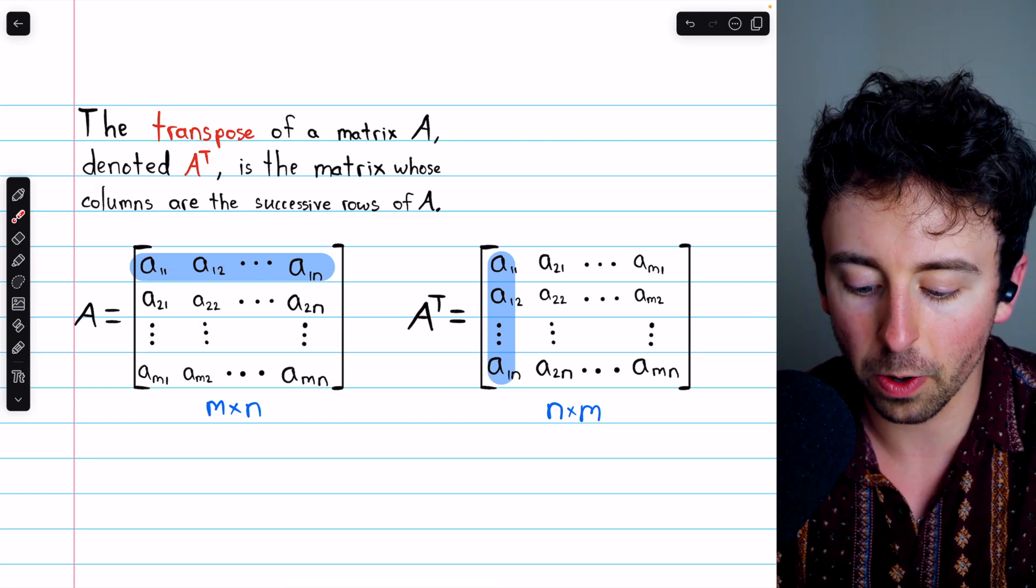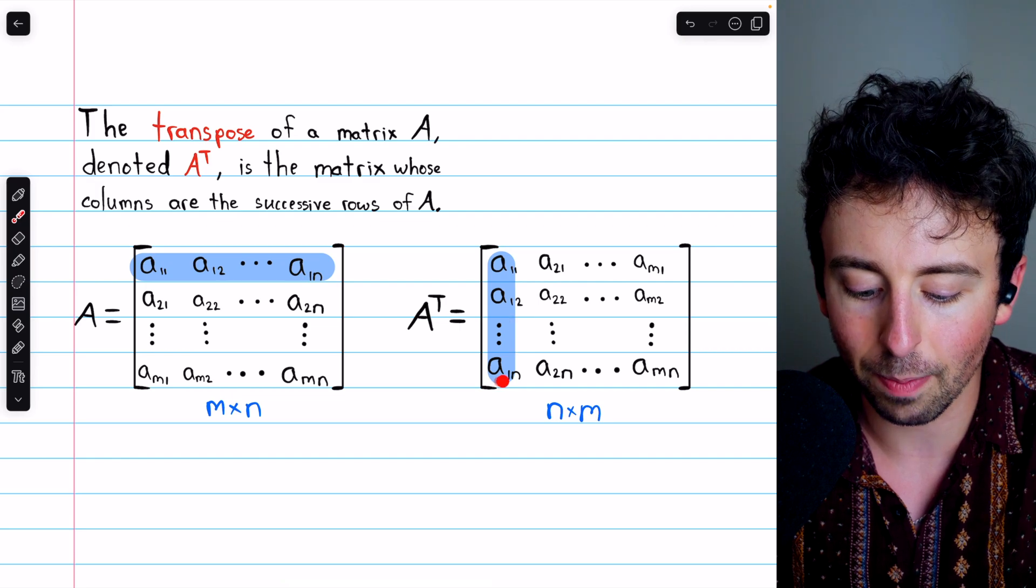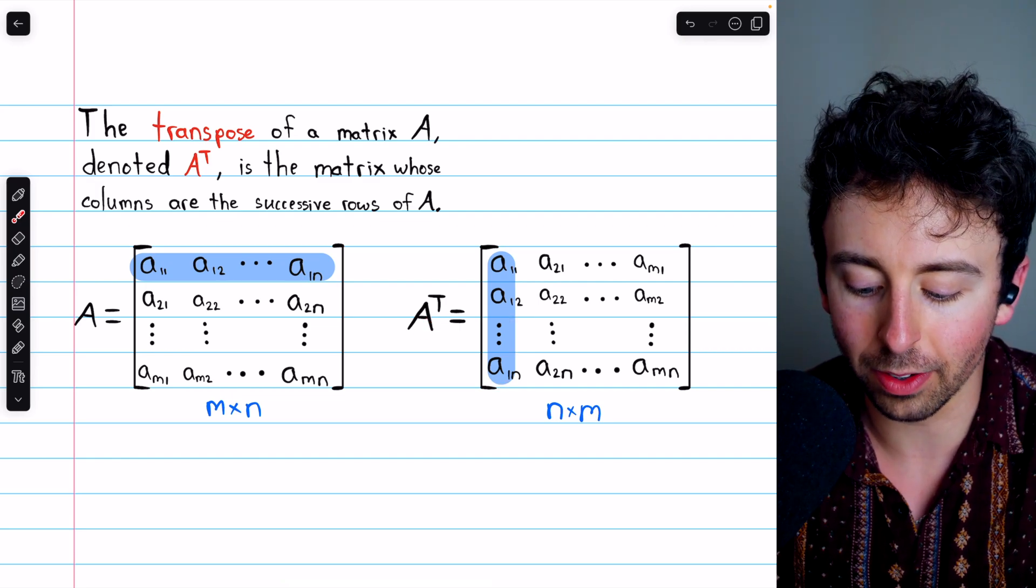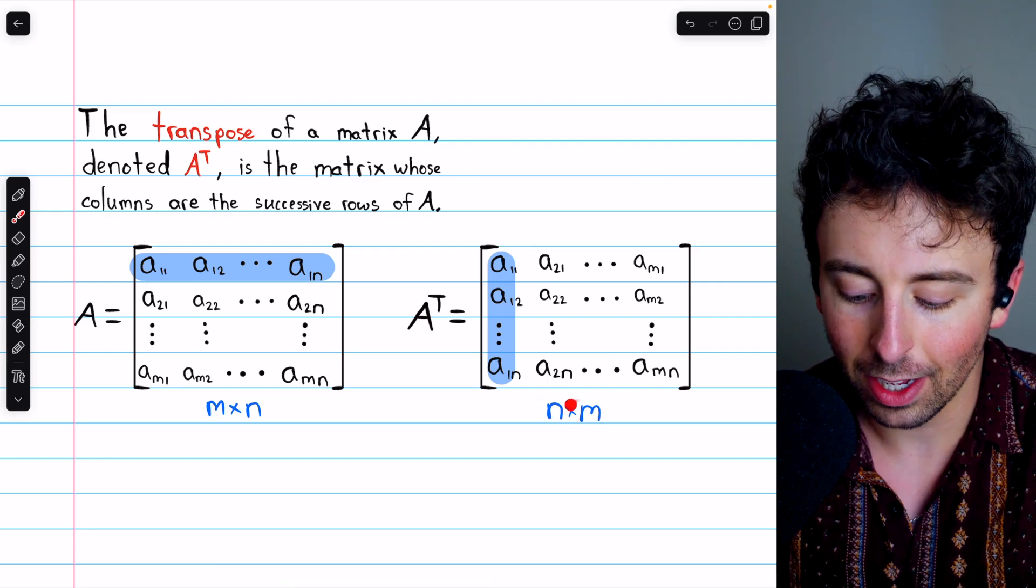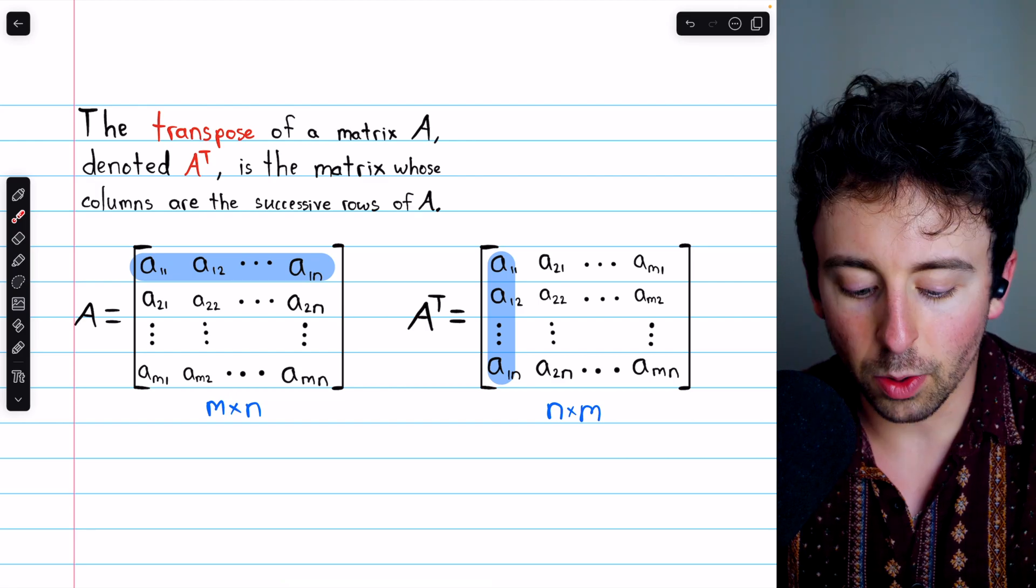This first row has become the first column, A11, A12, all the way up through A1n. And of course, this transpose has dimensions n by m, so it's like the reverse of A in terms of the dimensions.